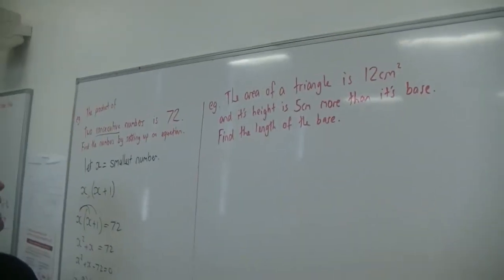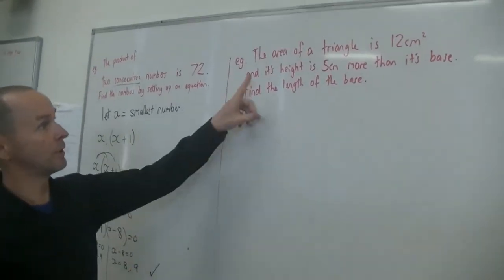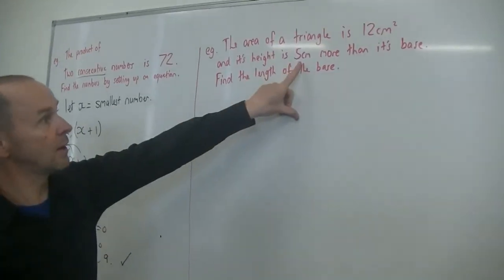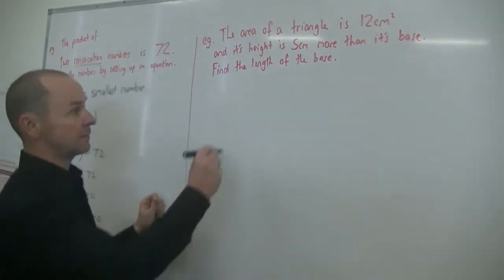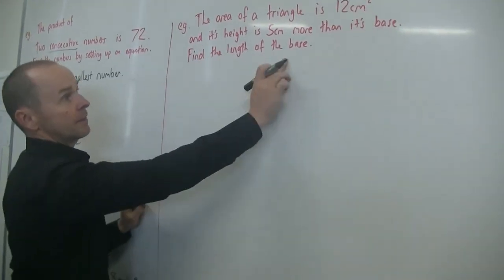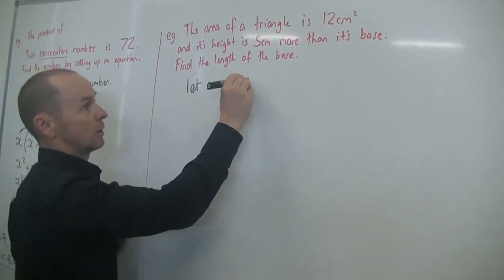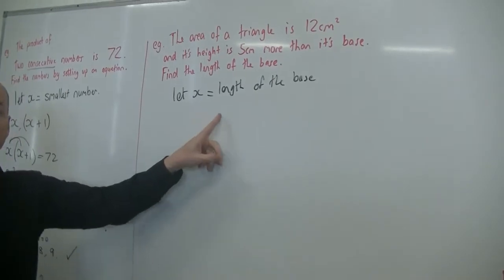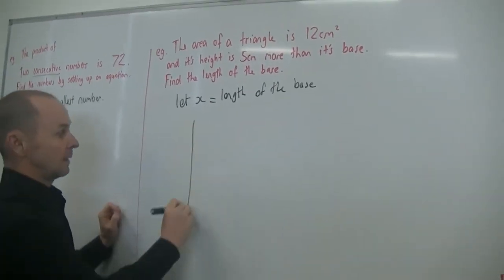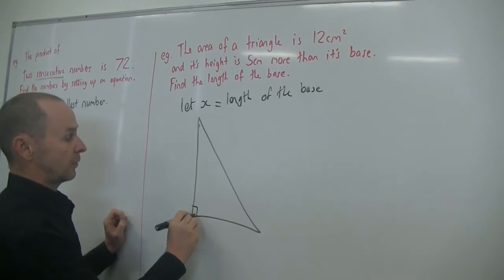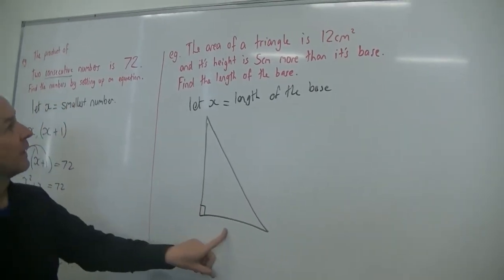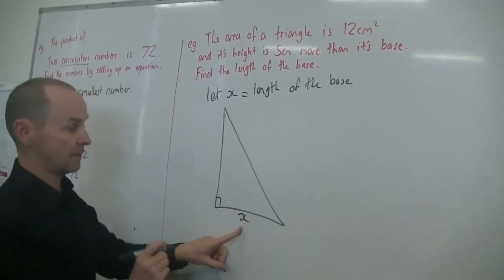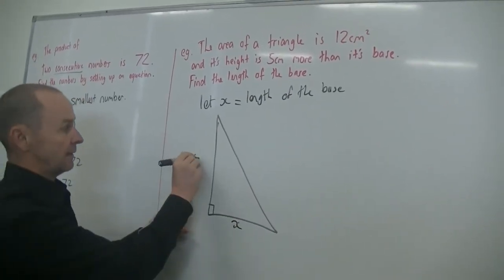All right, and moving on to the last one, again, you might want to draw a diagram for it. The area of the triangle is 12 centimetres squared. Its height is 5 centimetres more than its base. Find the length of the base. Let's draw a picture. The length of the base, so let x equal length of the base. It's always a good term to find the variable so you know what it is that you're finding. Let's draw a diagram. Roughly correct, so there's my right angle triangle. The area of the triangle is 12. Its height is 5 centimetres more than its base. So x is the base and the height is x plus 5.